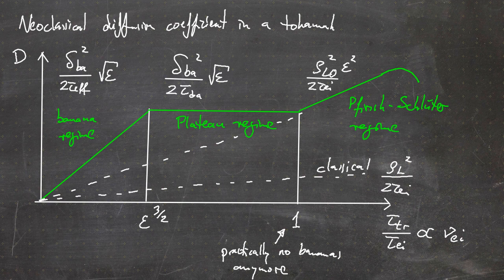That's it for this video, where we looked into trapped particles and how they contribute to neoclassical transport. We distinguished between particles experiencing almost no collisions (staying in banana orbits), particles experiencing small angle collisions (transiting from trapped to passing), and particles experiencing many collisions (the Pfirsch-Schlüter regime). In the end, we get the full neoclassical diffusion coefficient in the tokamak with three regimes: the banana regime, the plateau regime, and the first Pfirsch-Schlüter regime.